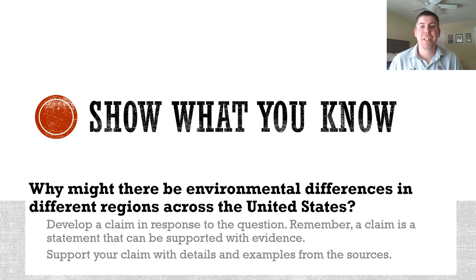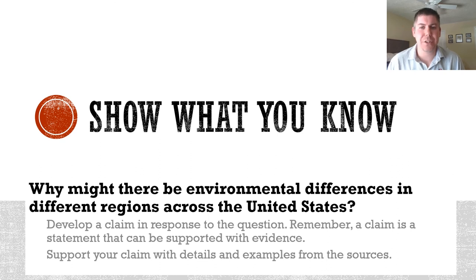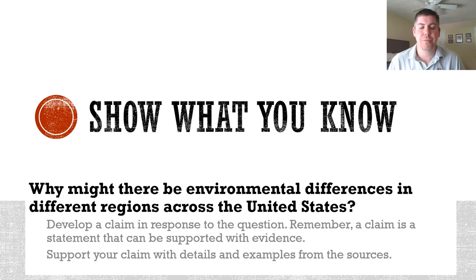Now that we have explored different sources around physical geography, climate, vegetation, and natural resources, we are prepared to develop a claim and a short explanation to respond to our essential question: why might there be environmental differences in different regions across the United States? On a separate sheet of paper or a Word document, please develop a claim in response to the essential question. Remember, a claim is a statement that can be supported with evidence. Using the sources we examined, try to support your claim with details and examples directly from the sources.